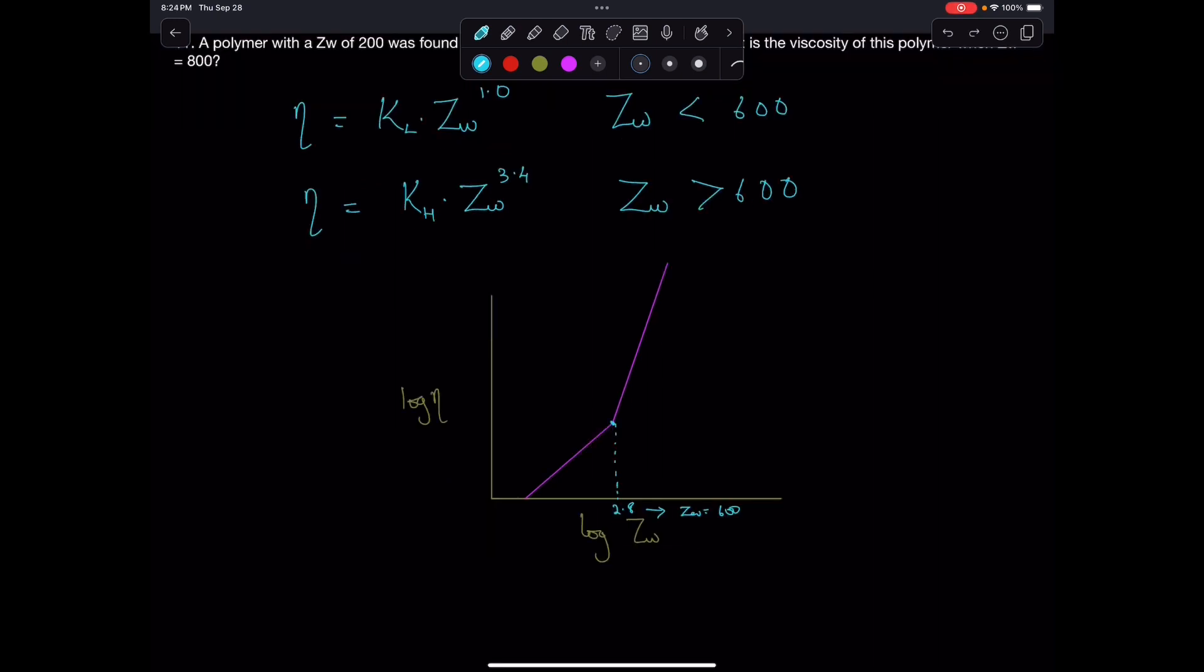We can say that eta at ZW equals 600 is equal to KL times ZW to the power 1.0, which is equal to KH times ZW to the power 3.4. This is the point where the two relationships meet.